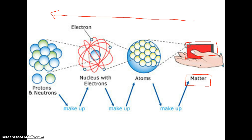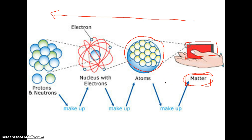What you can't necessarily see from this picture is this second diagram right here — what makes up this block, what makes up our matter. The answer is: at a very very tiny level, at a fundamental level, all matter is composed of atoms. All matter is composed of atoms.